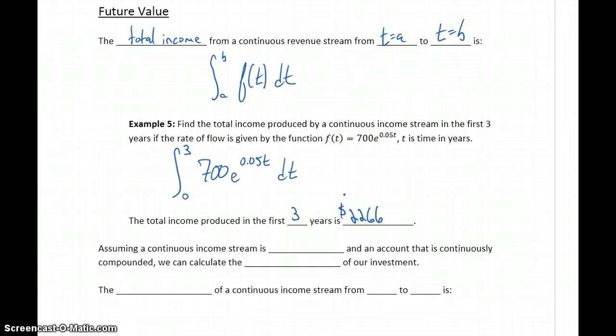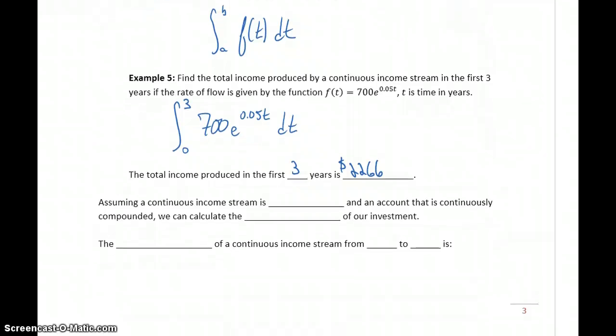Given a continuous income stream, we can calculate the revenue that we'll see from that, or the income that we'll receive from that. We can also think about taking that income from a continuous income stream and investing it. If that incoming income is invested in an account that's continuously compounded, we can calculate the future value of our investment.